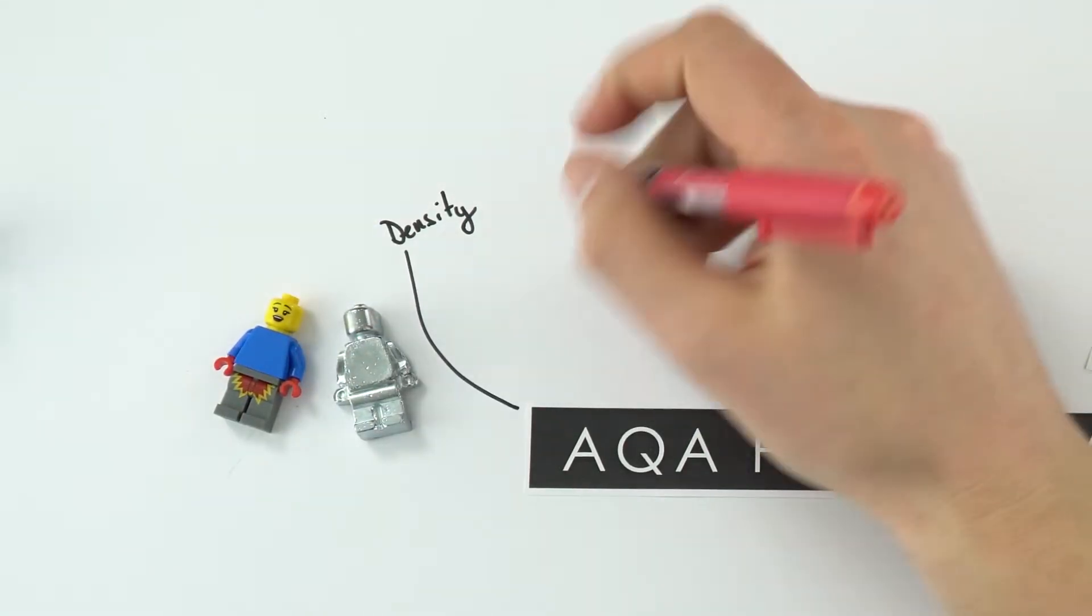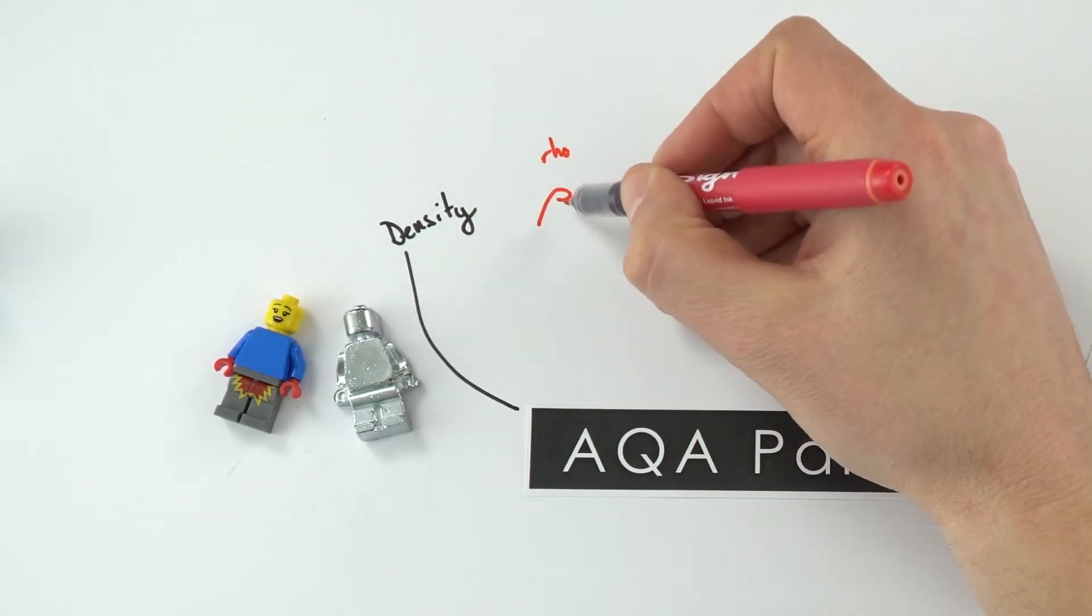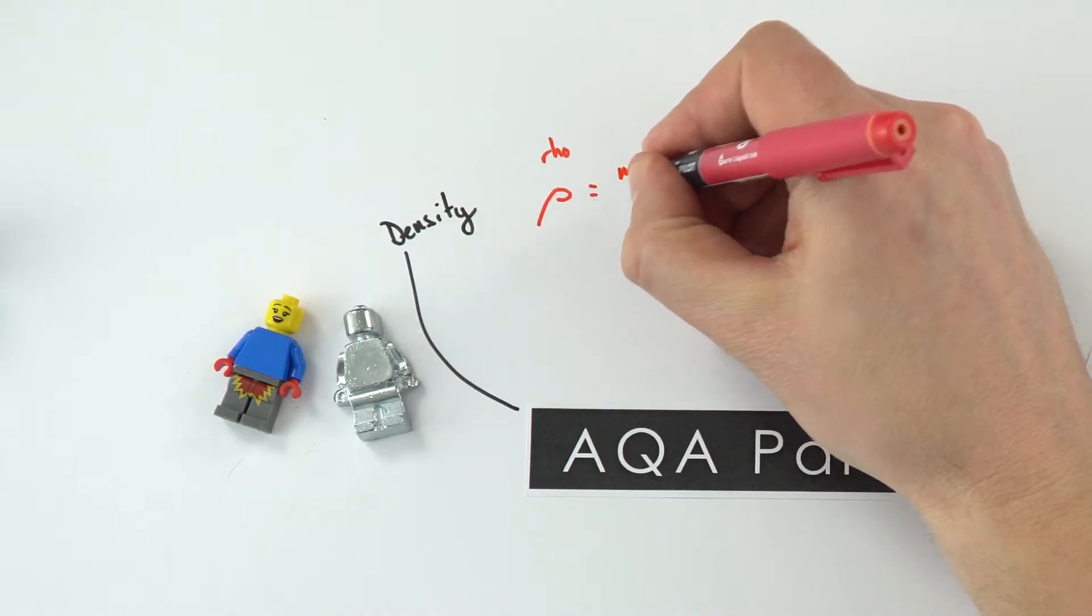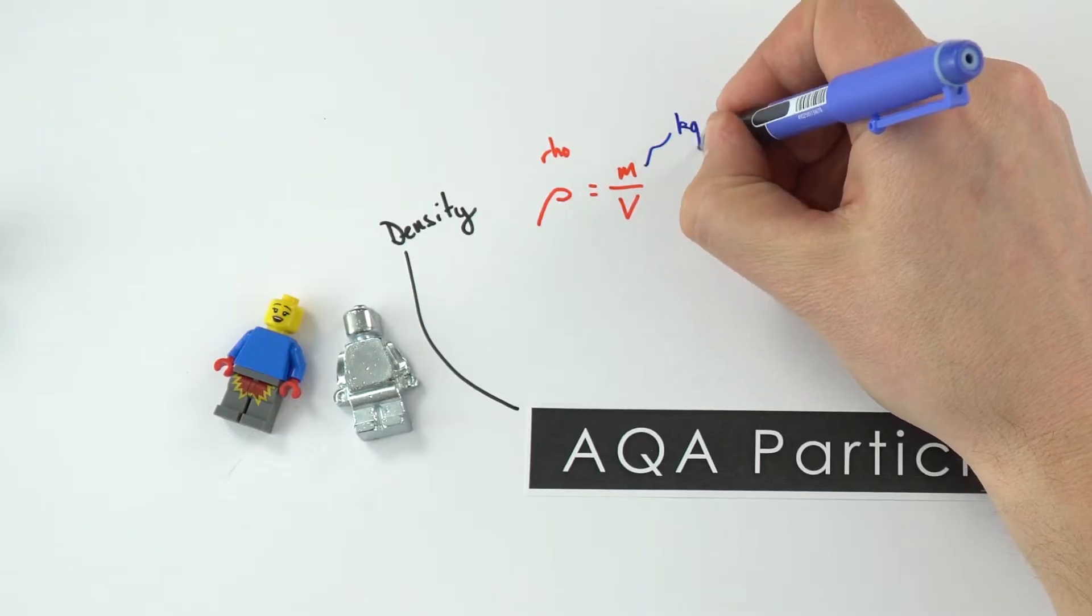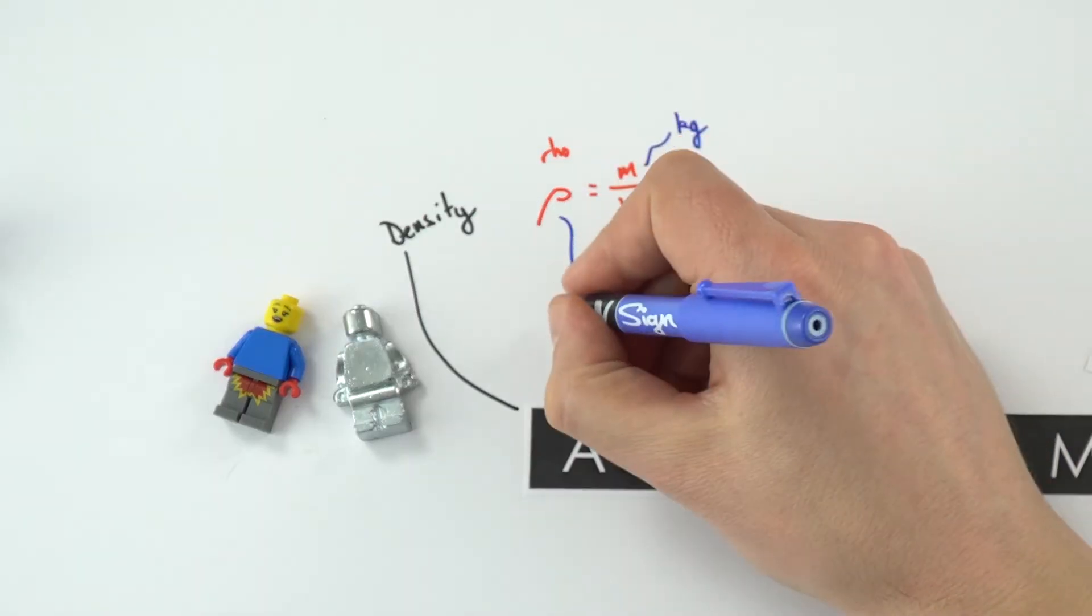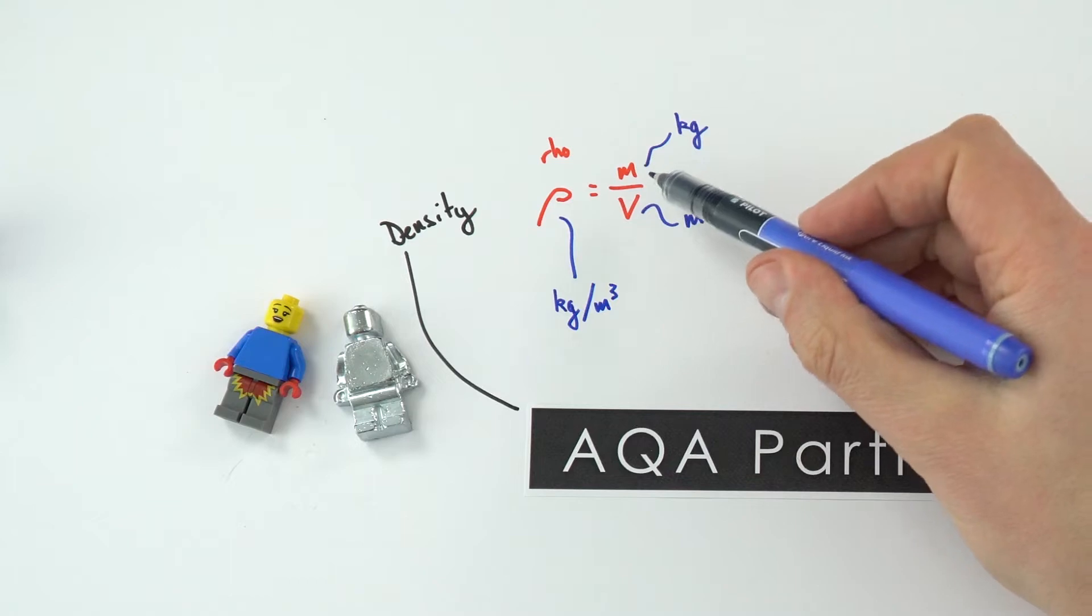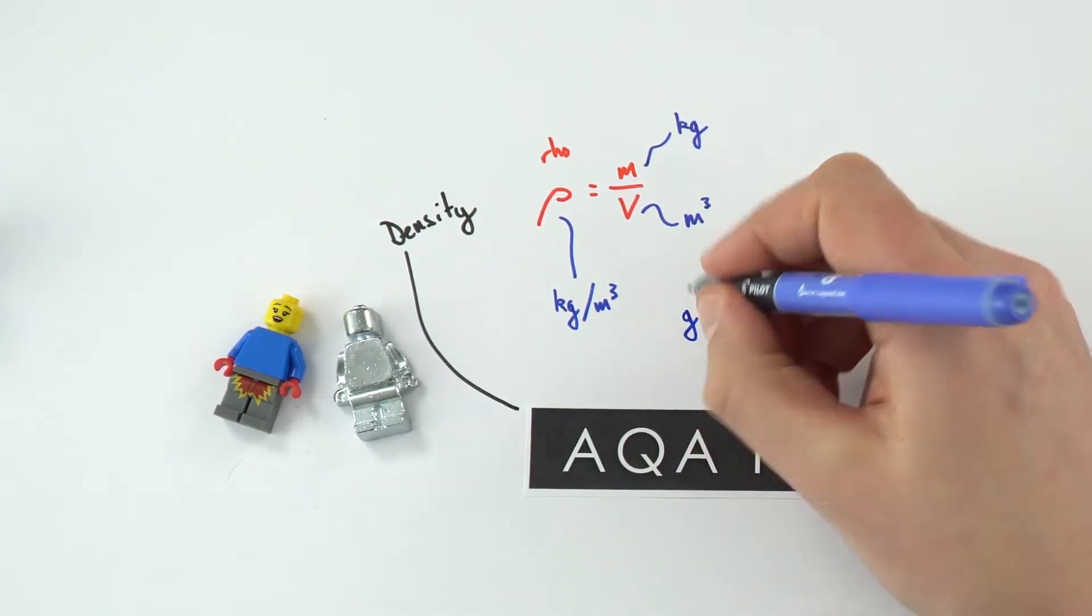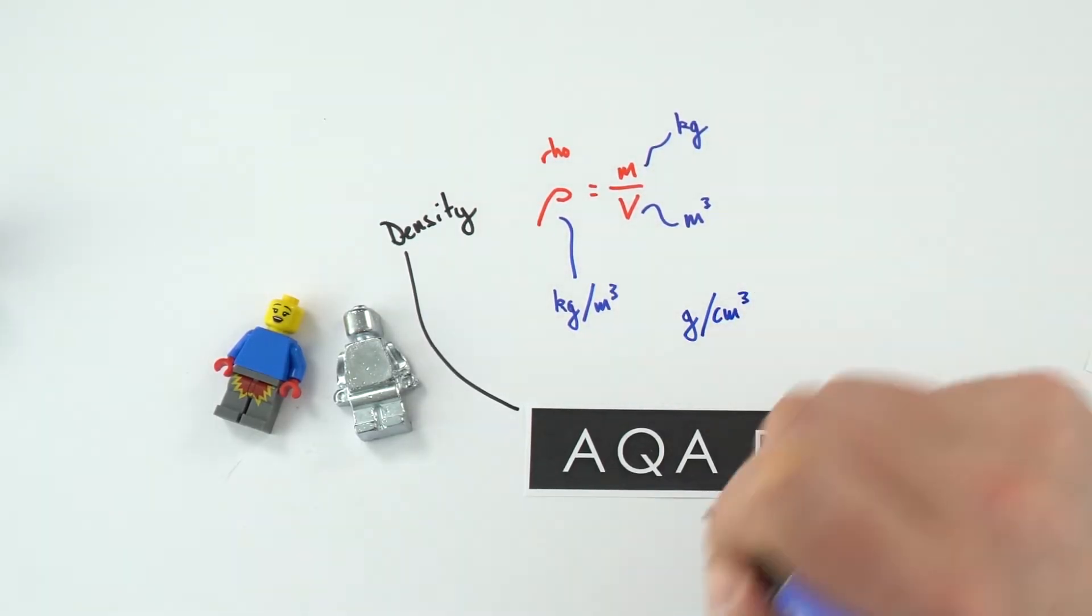The way that we work out density, we use the symbol rho, a Greek letter, and it's equal to the mass divided by the volume. Because we always measure mass in kilograms and volume in cubic metres, this gives our density in kilograms per cubic metre. Although sometimes if we measure mass in grams or volume in cubic centimetres, we could look at grams per cubic centimetre.